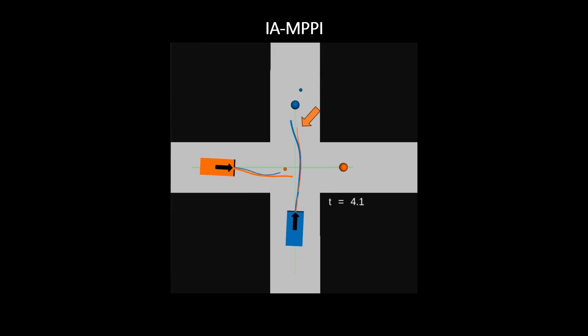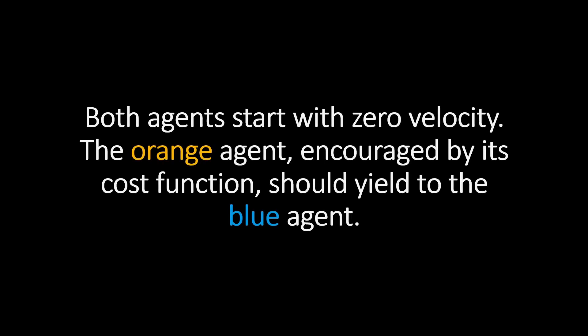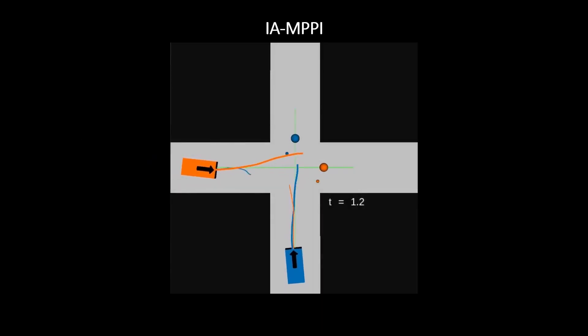The same can be seen for the blue agent in its respective color. Both agents start with zero velocity. The orange agent, encouraged by its cost function, should yield to the blue agent. Because the agents start with zero velocity, they observe each other standing still. Thus, both agents think that they can cross the intersection unobstructed. Only after a few time steps, it becomes clear that both agents want to cross.